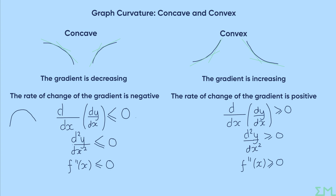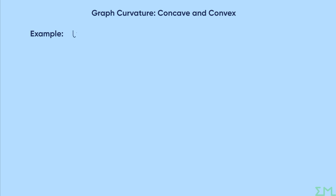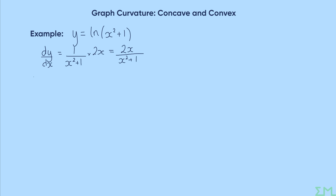Let's do an example. We're going to look at y = ln(x² + 1) and investigate the curvature in general — effectively answering where the graph is concave and where it is convex. We need to find the second derivative, so let's start with the first derivative. Using the chain rule, differentiating ln gives us 1/(x² + 1), multiplied by the derivative of the inside, which is 2x. Written as a single fraction: dy/dx = 2x/(x² + 1).